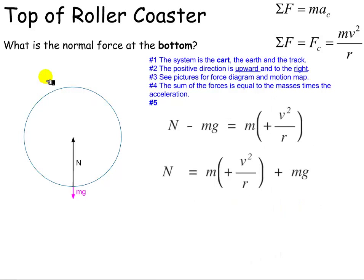Now let's look at the normal force at the bottom of a roller coaster. Still mainly the same setup, except that now the normal force is upward. There's N. And we're going to subtract the force due to gravity, and it equals mv squared over R.